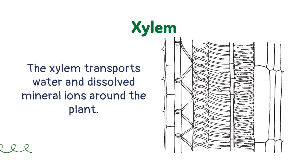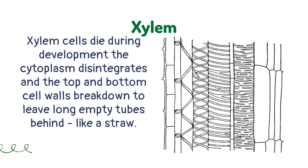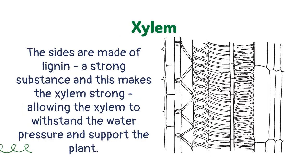The xylem transports water and dissolved mineral ions around the plant. Xylem cells die during development — the cytoplasm disintegrates and the top and bottom cell walls break down to leave long empty tubes behind, like a straw. The sides of the xylem are made of lignin, a strong substance, making the xylem strong and allowing it to withstand water pressure and support the plant.